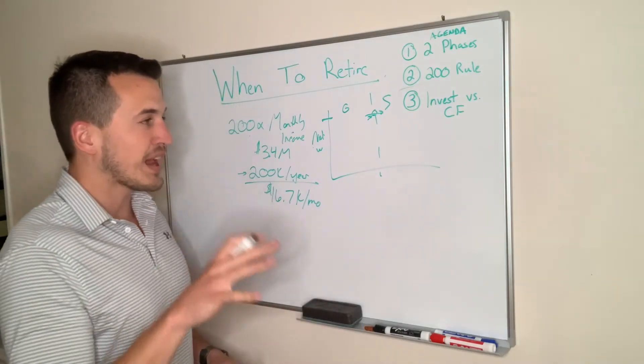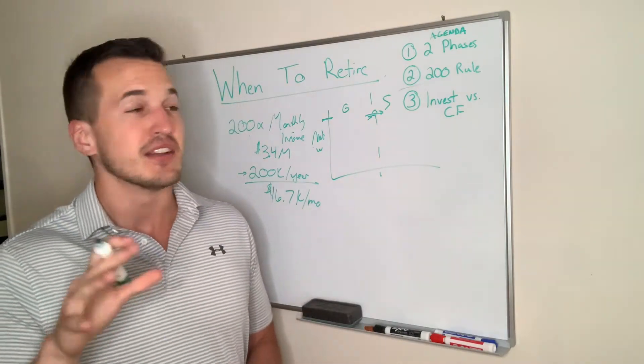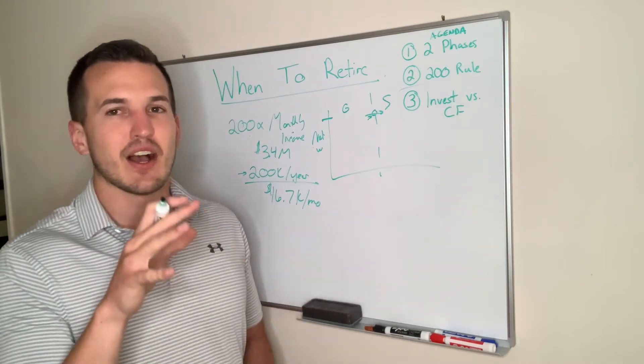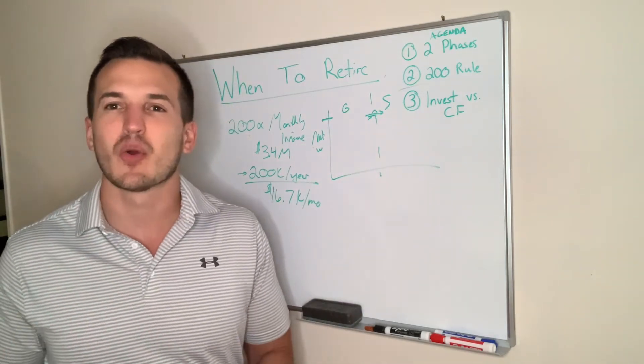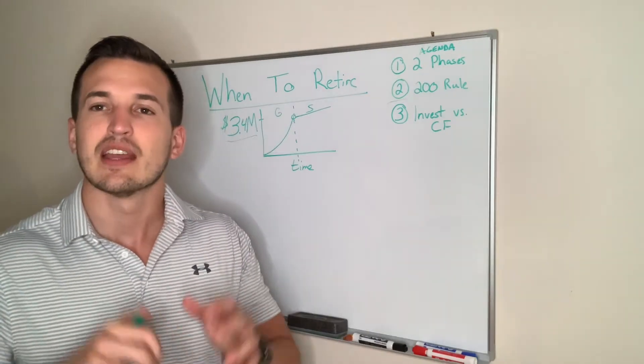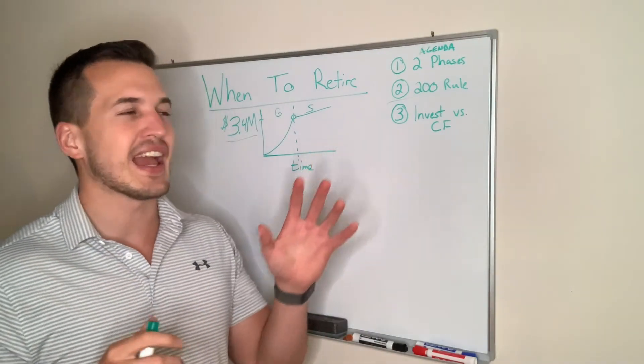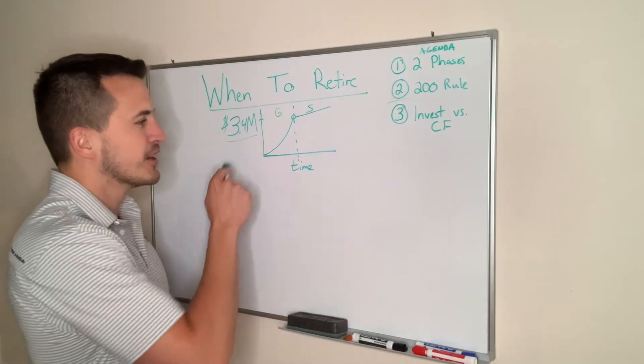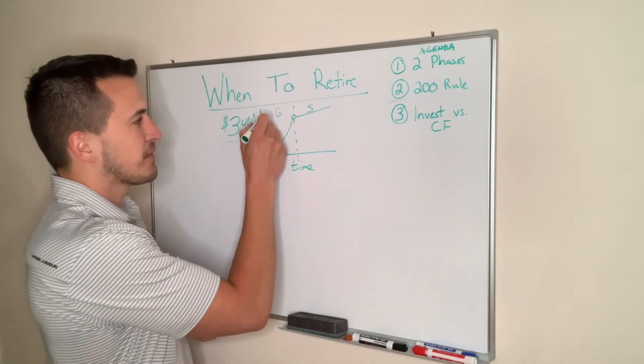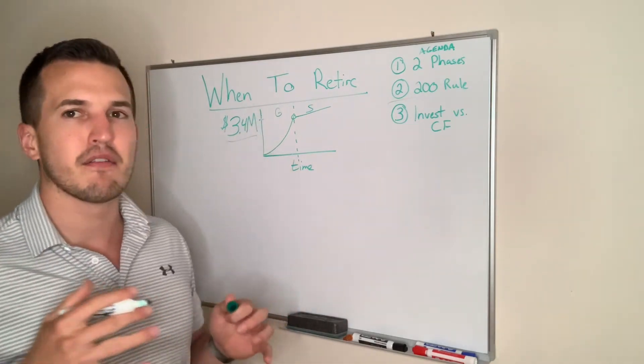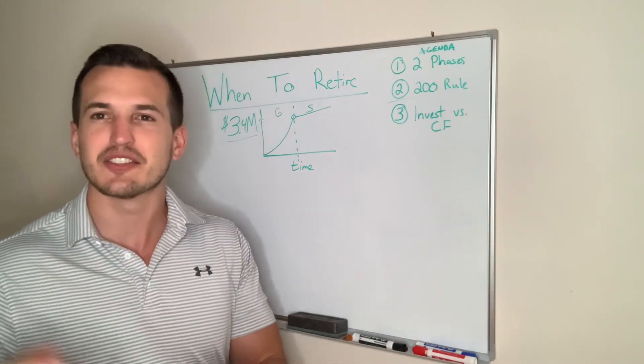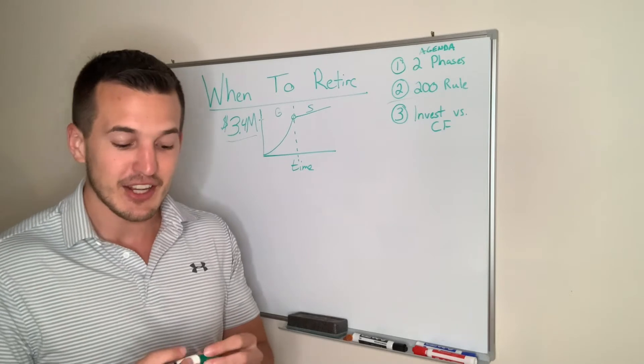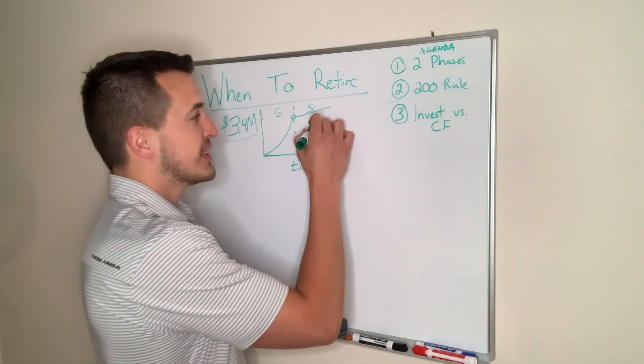Now that we have that target identified, we're going to talk tactically about how you can invest and actually hit that in the quickest way possible. And we will close out with looking at how can we reach that 3.4 million. That is what it's going to take for our example of getting off the merry-go-round, the hamster wheel, jumping off whatever way you want to think about it, so you can enjoy your retirement.